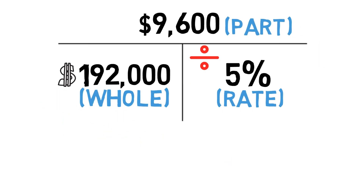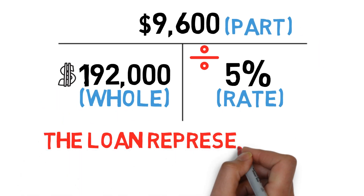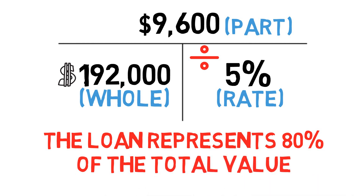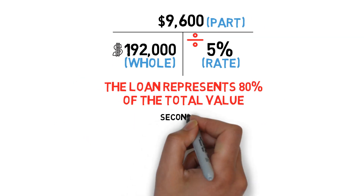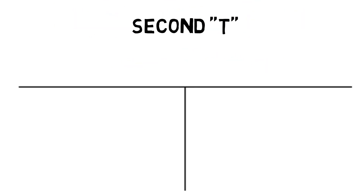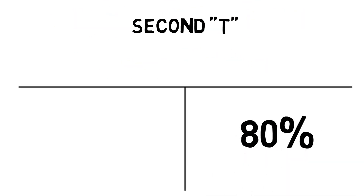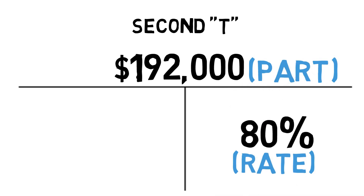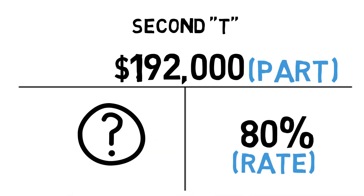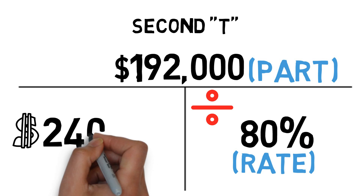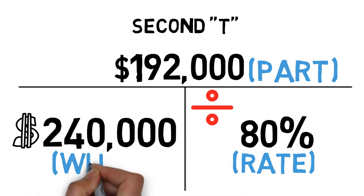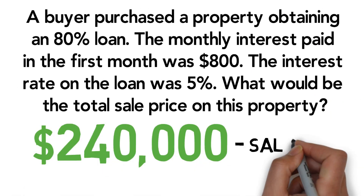Once we have this number, we know that the loan represents 80% of the total value. So to get the total value, we'll go to our second T. Our percentage is 80%, which goes in the bottom right. The loan amount will be a smaller number in relationship to the value, so $192,000 is the part. We take $192,000 and divide by 80% to come up with a total value of $240,000. That is our answer.